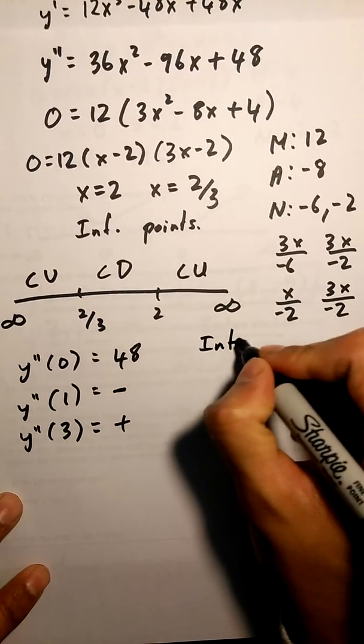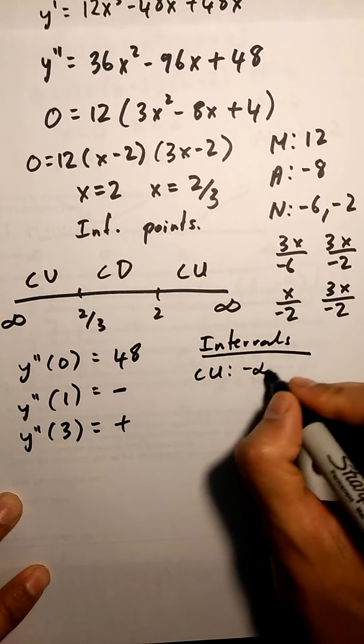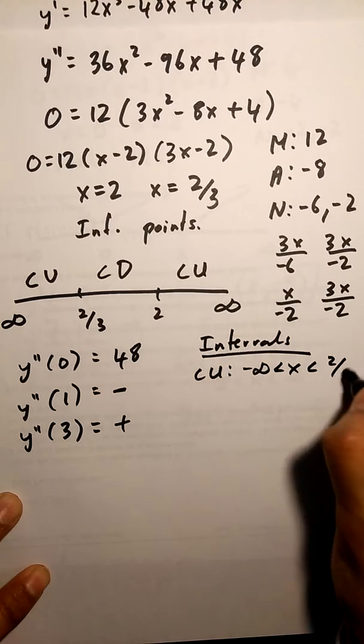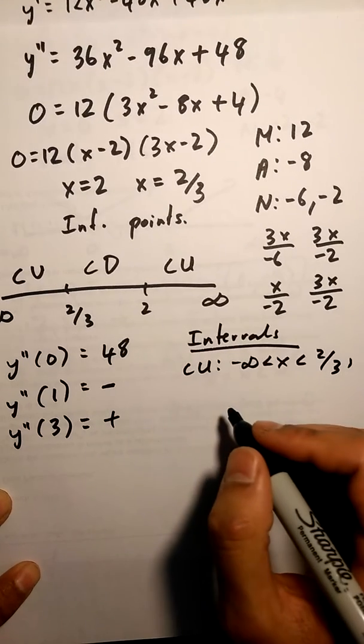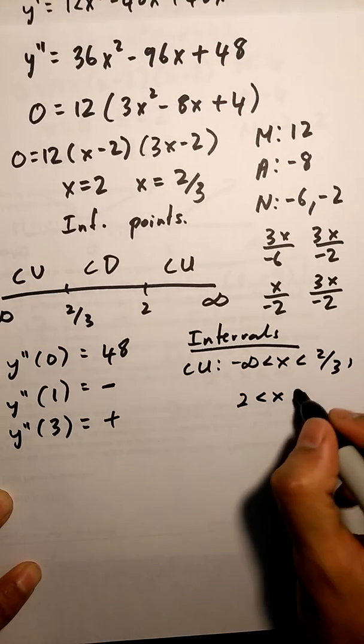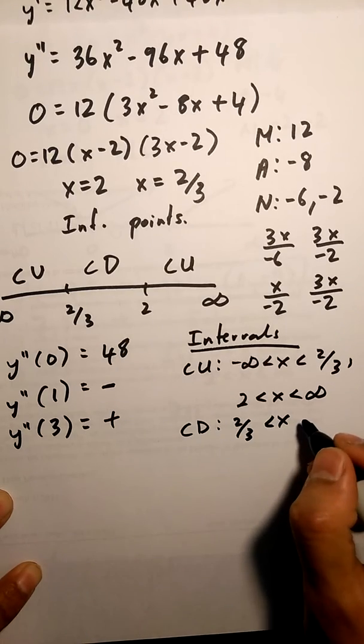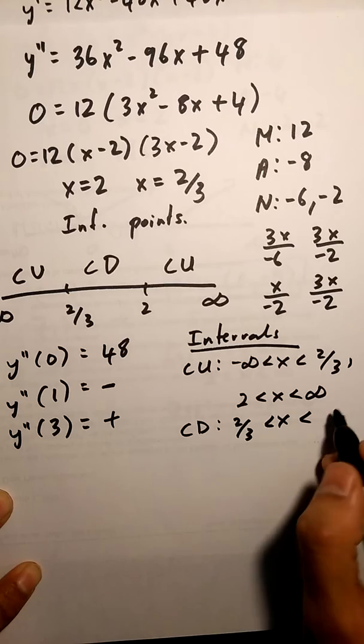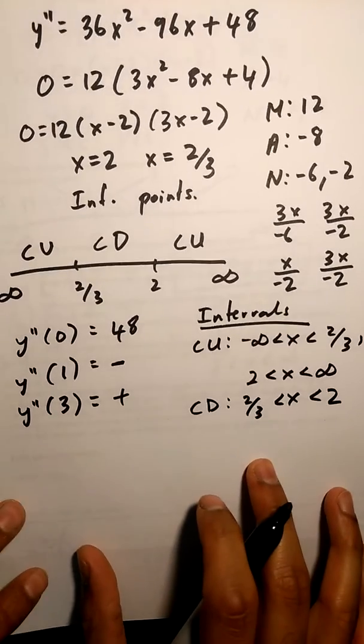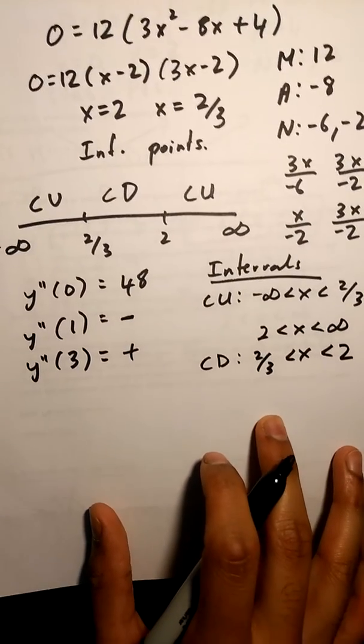So I'm going to write my intervals: concave up negative infinity, concave down, and concave up.